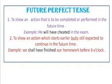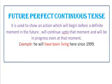Future perfect tense: jaisa ki perfect tense mein 'has' aur 'have' ka use hota hai, past mein 'had' aata hai, yahaan 'will have' use karenge. Like: 'He will have cheated in the exam.' Though it sounds a bit odd, grammatically it is correct. Then future perfect continuous tense — it is used to show an action which will begin before a definite moment in the future, will continue up to that moment, and will be in progress even at that moment. Perfect hai toh 'have' aayega, continuous hai toh 'be' aur '-ing' lagega. So: 'He will have been living here since 1999.'